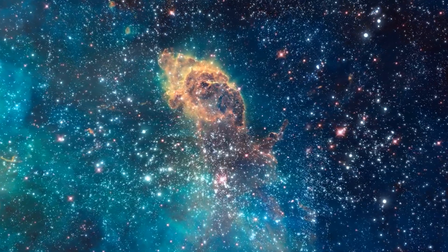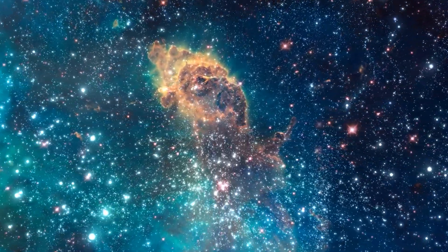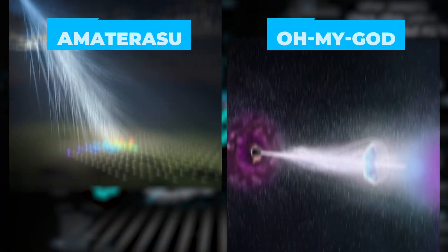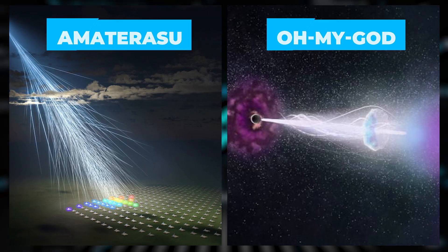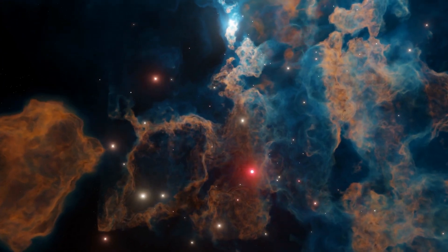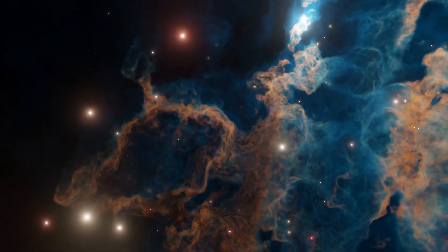Particles with low energy move like a ball in a pinball machine, bouncing around due to electromagnetic fields in space. But super-energetic particles like Oh My God or Amaterasu don't follow that pattern. They should go through space without bending because of magnetic fields, making it possible to determine where they come from.